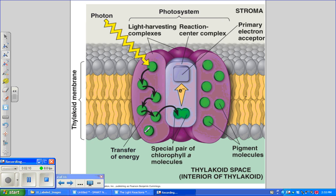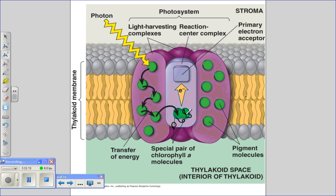One more thing about this photosystem here. In Photosystem II, these two chlorophyll A molecules are known as P680. This is because they absorb light best at wavelengths of 680 nanometers.